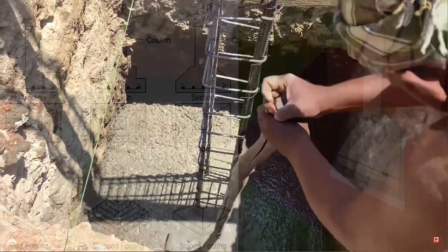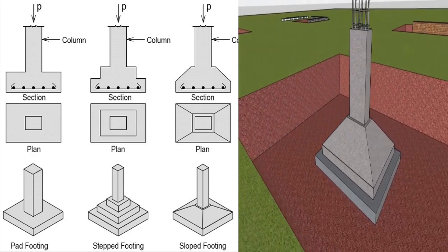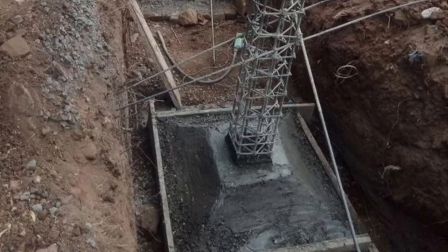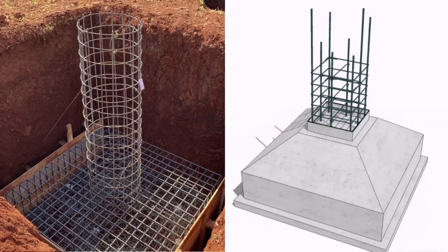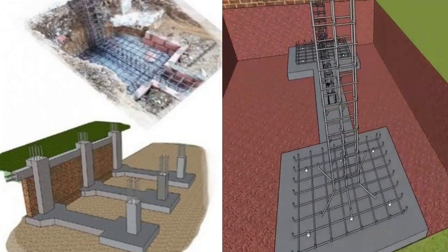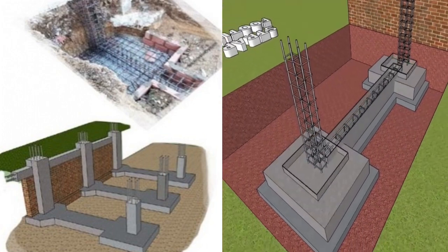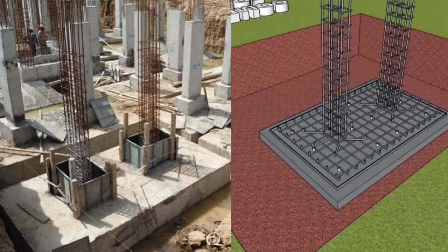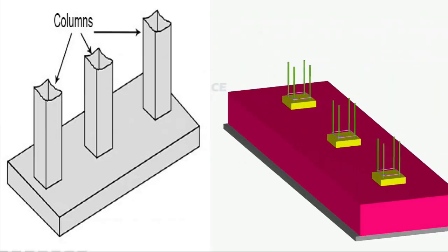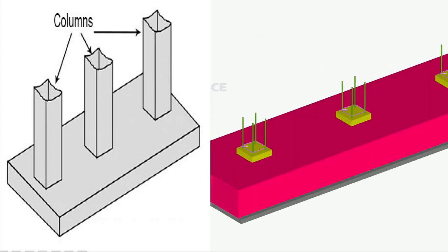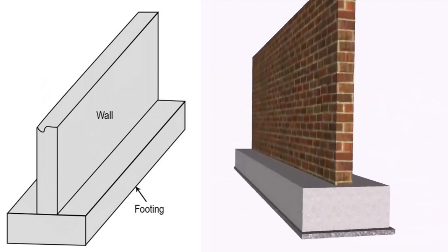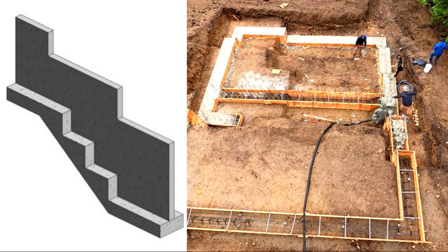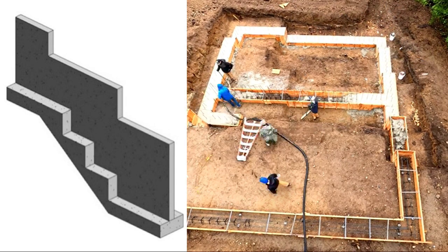Kinds of shallow foundation: A. Isolated — a single column placed on a single footing, with various types such as block, stepped, slope, corner, side, and center. B. Cantilevered — two isolated columns are connected by a tie beam. C. Combined — two columns are placed on a single footing. D. Continuous — a row of columns is placed on an extended footing. E. Strip — an extended footing used for wall foundation. F. Stepped — a continuous or strip footing that changes in level, ideal for a sloping bearing stratum.